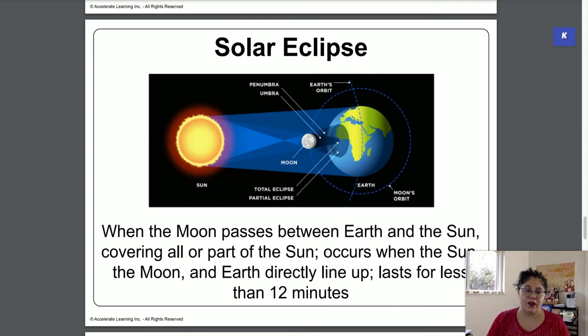That's because the moon can only block the Sun in a certain area. Now this doesn't happen very often. The Moon, the Earth, and the Sun have to be lined up in a very specific perfect way for this to happen.